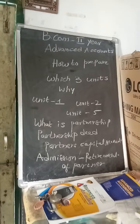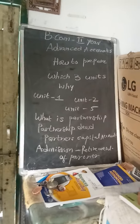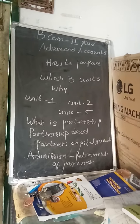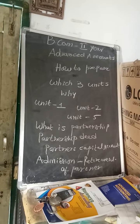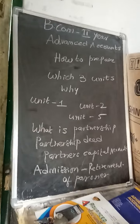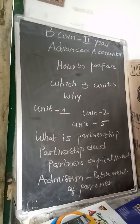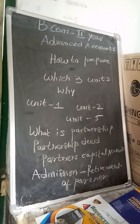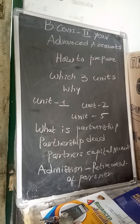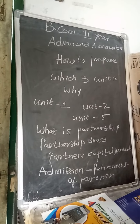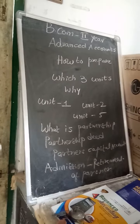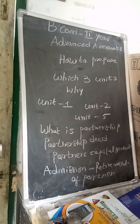You are also going to get one question on partners' capital accounts — either fixed capital or fluctuating capital — and one problem on admission or retirement. In most cases you will see a problem on admission of a partner. This is a brief introduction about Unit 1 and Unit 2.